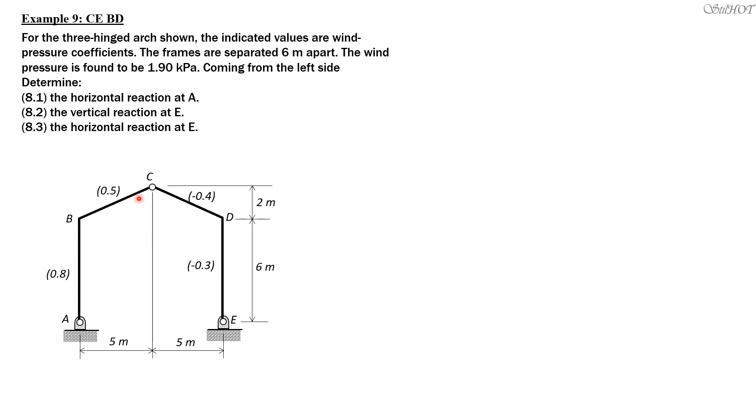Remember that we have interior three-hinged arches and they are separated 6 meters apart. Perpendicular to the board, the width that should be considered is 6 meters. We have these pressure coefficients. Positive pressure coefficients means pressure, and negative means suction.